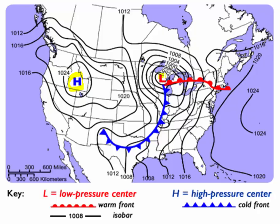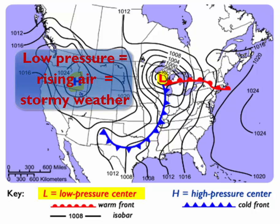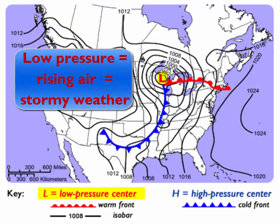And L means low air pressure. Low air pressure means rising air — the air is rising, it's cooling, condensation occurs, and you have cloud formation and precipitation formation.